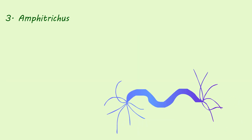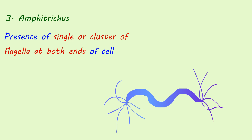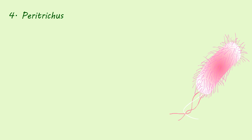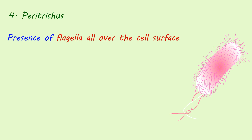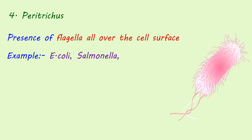3. Amphitrichous — presence of a single or cluster of flagella at both ends of the cell. Example: Aquaspirillum. 4. Peritrichous — presence of flagella all over the cell surface. Examples: E. coli, Salmonella, Klebsiella.